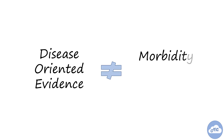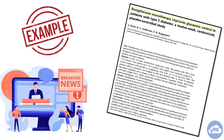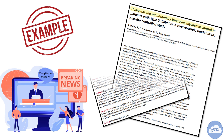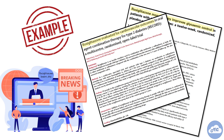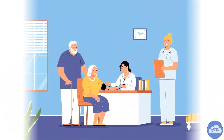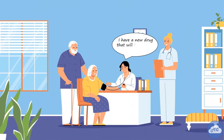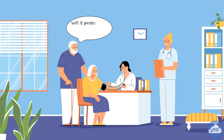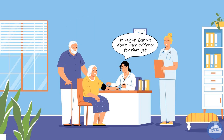The main problem with using disease-oriented evidence is that it doesn't always correspond to the morbidity and mortality results that were presumed. For example, the drug rosiglitazone lowers hemoglobin A1C but was never shown to improve clinical outcomes from diabetes, and in fact increases the risk of cardiovascular harm. Making treatment decisions based solely on disease-oriented evidence can result in unnecessary treatment, costs, unintended harms, or the possibility of no real benefit.